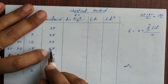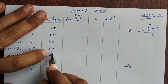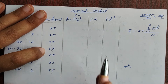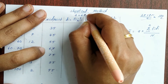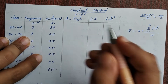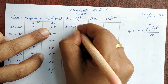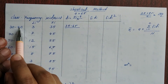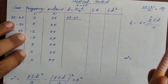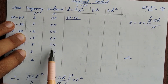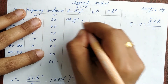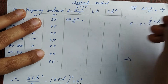A is equal to 65. Now di equals (xi minus A) divided by h. Here xi values are listed and fi is frequency. The class size h is 10, so we divide by 10. So 35 minus 65 is minus 30, and minus 30 divided by 10 equals minus 3.